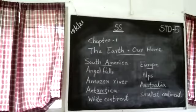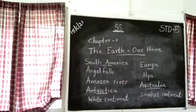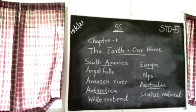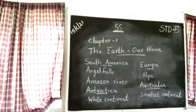Next is Europe. Can you see the location of Europe on the map? Europe is shown in yellow. It is the sixth largest continent. The highest mountain range in Europe is the Alps.